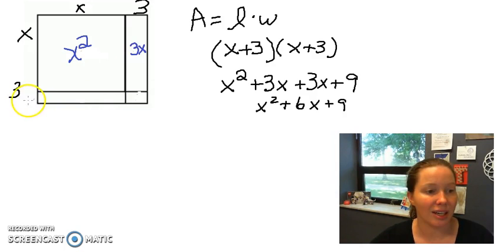This rectangle in here we have three along this side and this side is x so it is 3 times x. And the area of this rectangle on the bottom is 3 along here and x along there so 3x.